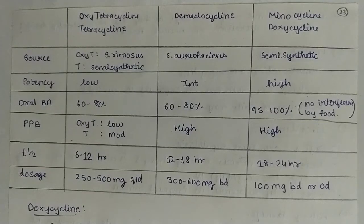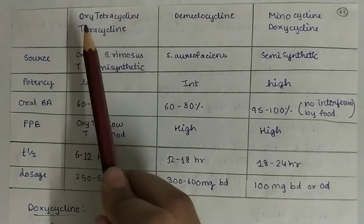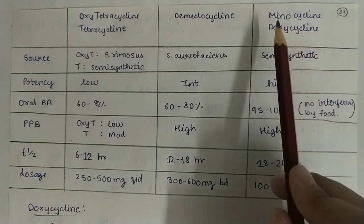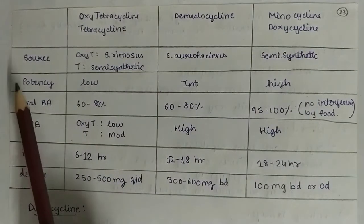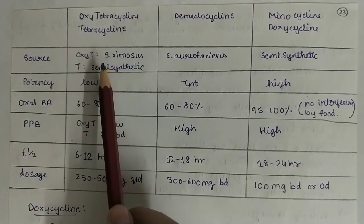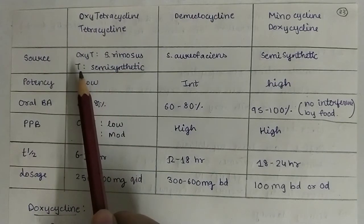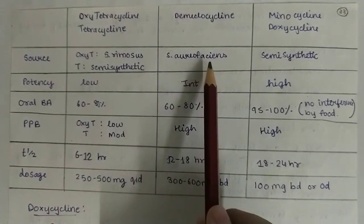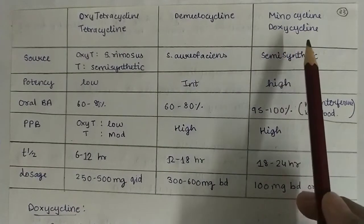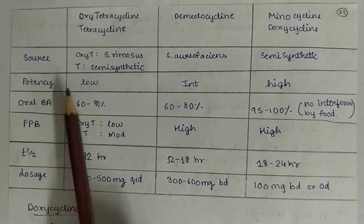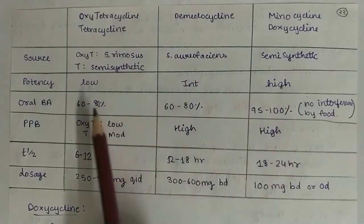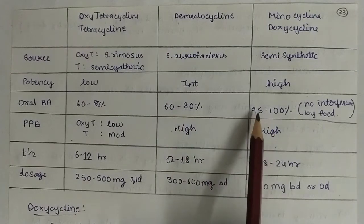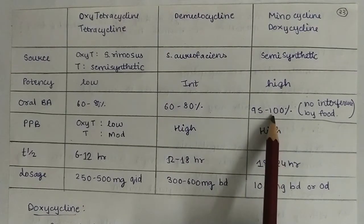Now we will see some differences between drugs of the tetracycline group: oxytetracycline, tetracycline, demeclocycline, minocycline, and doxycycline. The source of oxytetracycline is S. rimosus and tetracycline is semi-synthetic. Demeclocycline is obtained from S. aureofaciens. Minocycline and doxycycline are semi-synthetic. Potency: low, intermediate, and high. Oral bioavailability: 60–80% for oxytetracycline and tetracycline, and 95–100% for minocycline and doxycycline.